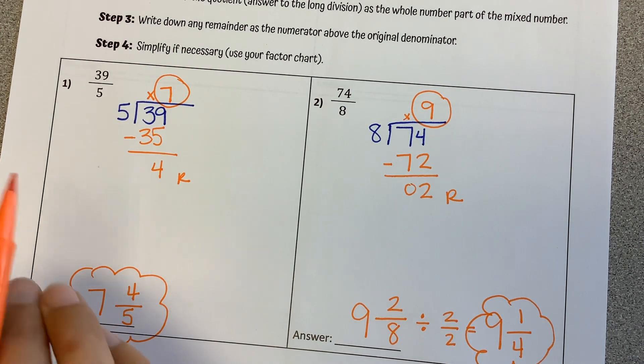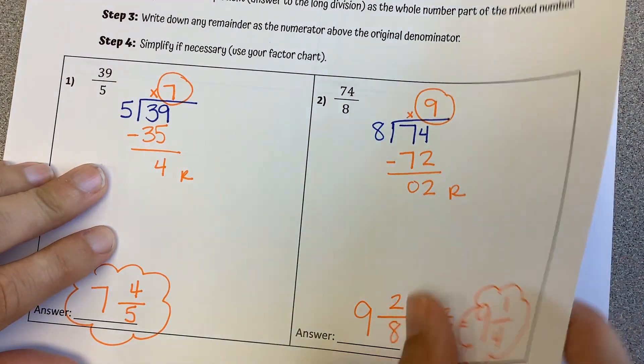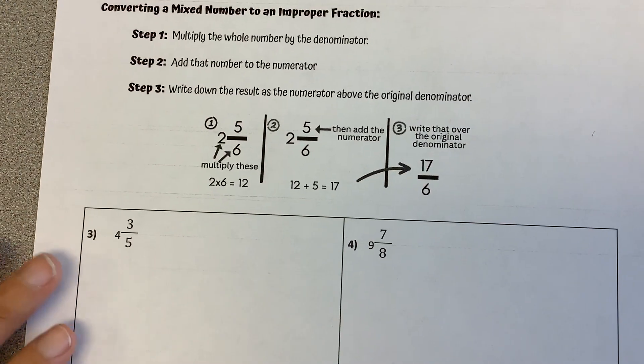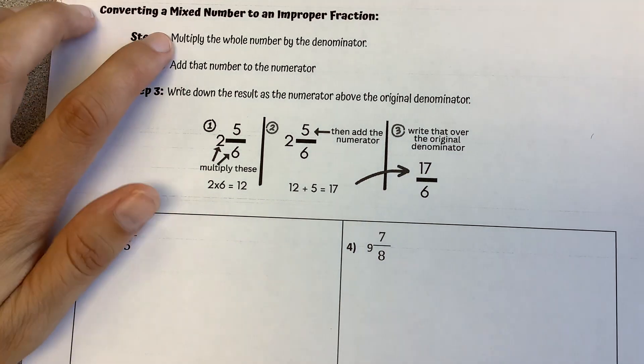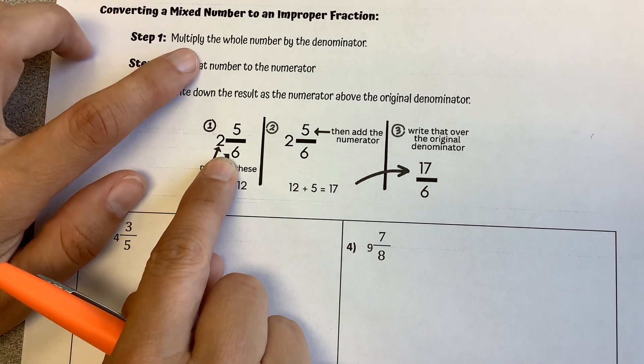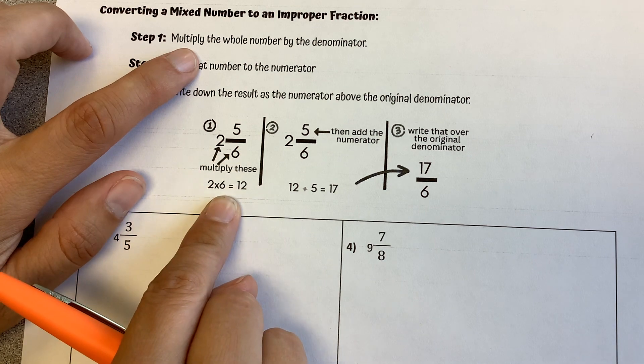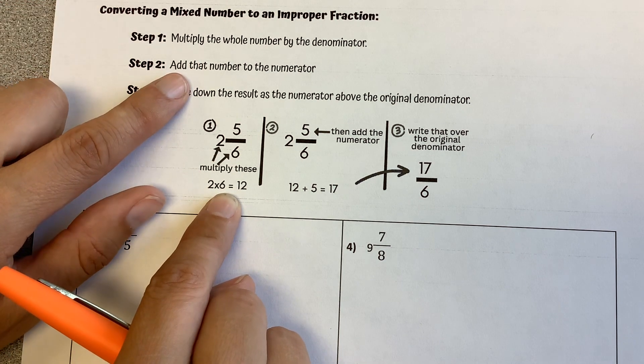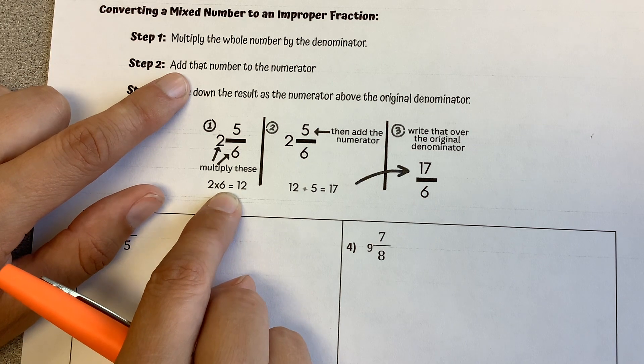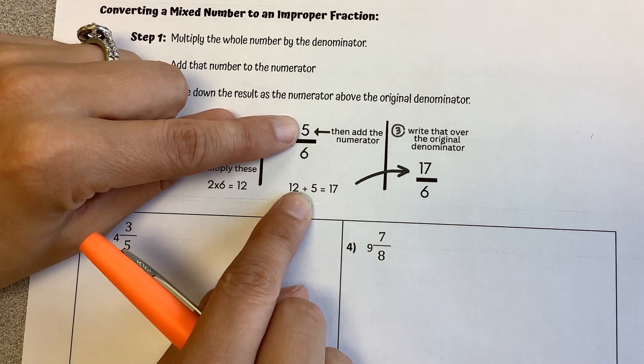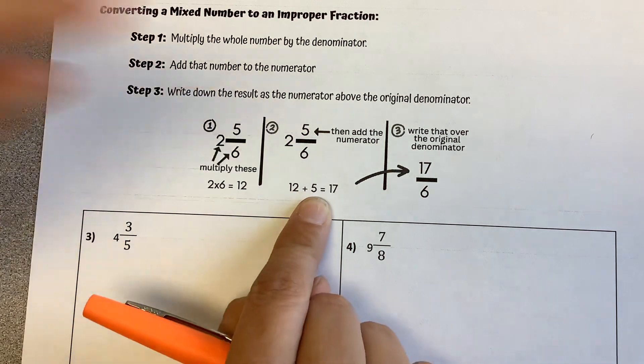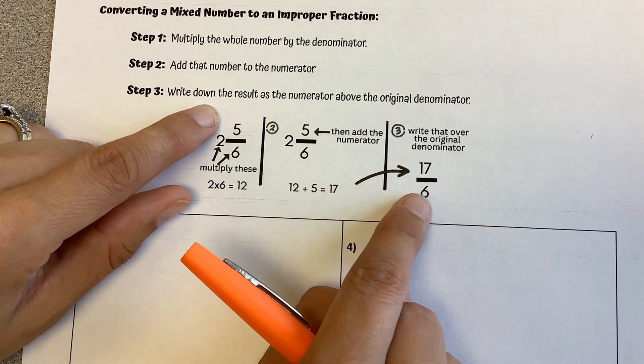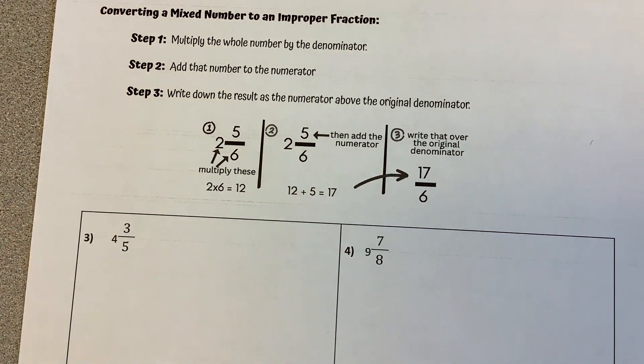So that's going from improper to mixed number. Let's do the reverse. From a mixed number to an improper fraction. So in this case, we're going to multiply the whole number on the outside times the denominator to get an answer. So here 2 times 6 is 12. Then we add that number to the numerator. So we take that number of 12 and we add the numerator of 5 to get 17. And then we write that result above the original denominator. So 17 over that original denominator of 6.